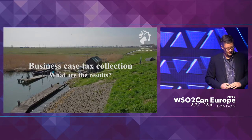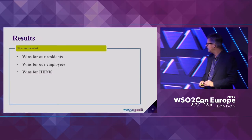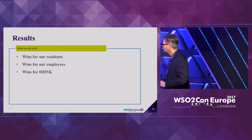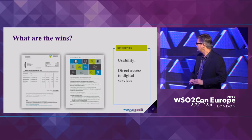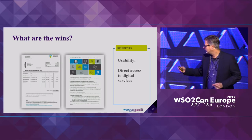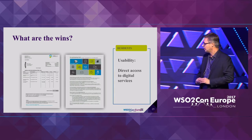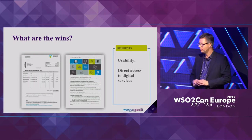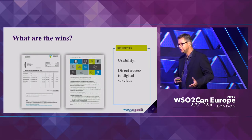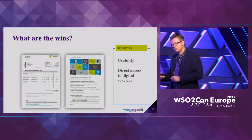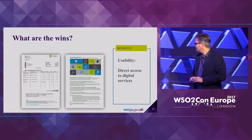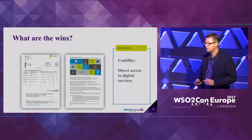Let's have a look at the results. We had three wins — for our residents, for our employees, and for our company. For our residents, we created usability. We created a lot of usability by using a digital tax form with tiles on it — when you press a tile, for example to pay your taxes, you were immediately linked through our digital front office where you could pay your taxes immediately. This example is being taken over by a lot of other governmental organizations.